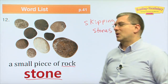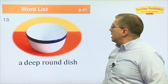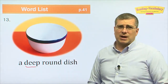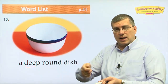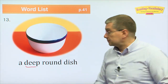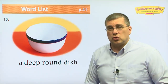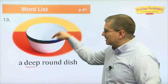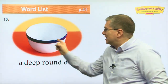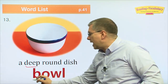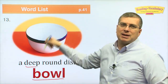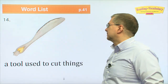Number thirteen: this is a deep, round dish. There are many kinds of dishes. A plate is flat — you eat food off it. But if you have soup, stew, or ramen, you don't put it on a plate because it'll go everywhere. You put it in this kind of deep, round dish, which is called a bowl.